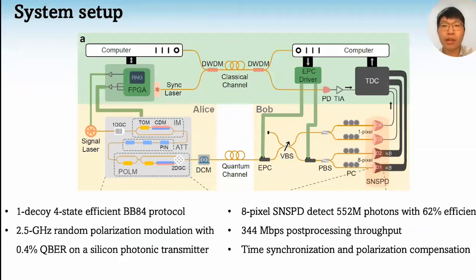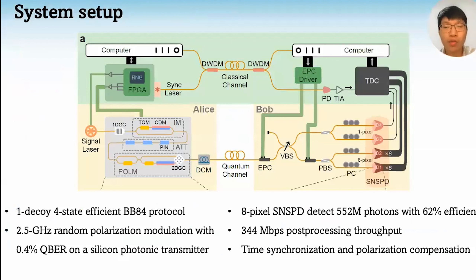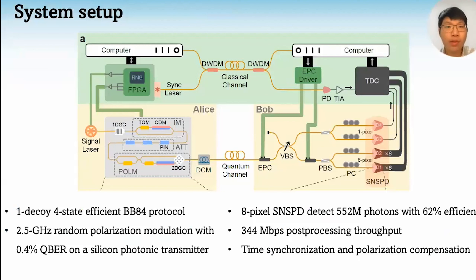The setup of our system is as the figure shows. We use one decoy intensity and four encoding state efficient BB84 protocol, and we generate the polarization states at 2.5 GHz clock rate with 0.4% quantum bit error rate. We also developed 8-pixel SNSPDs that can detect at most 552 million photons per second with 62% efficiency. To extract keys in real time, we achieved a post-processing system with a maximum throughput of 344 Mbps on average. We also implement time synchronization and polarization compensation techniques to stabilize our system over fiber channels.